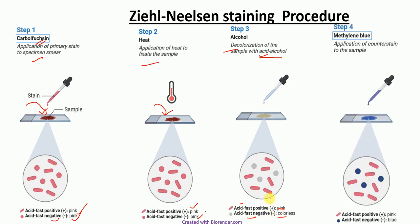In the final step, methylene blue is added as a counterstain. Acid-fast bacteria retain the pink color, whereas non-acid-fast bacteria appear blue. By the end of Ziehl-Neelsen staining, acid-fast positive bacteria appear pink and acid-fast negative bacteria appear blue.